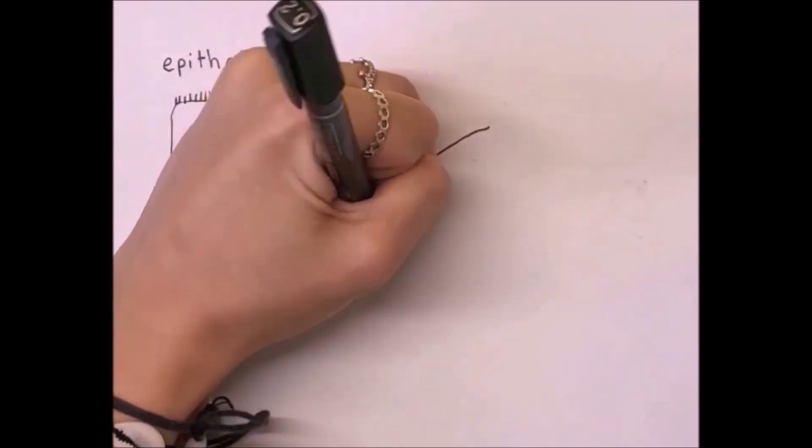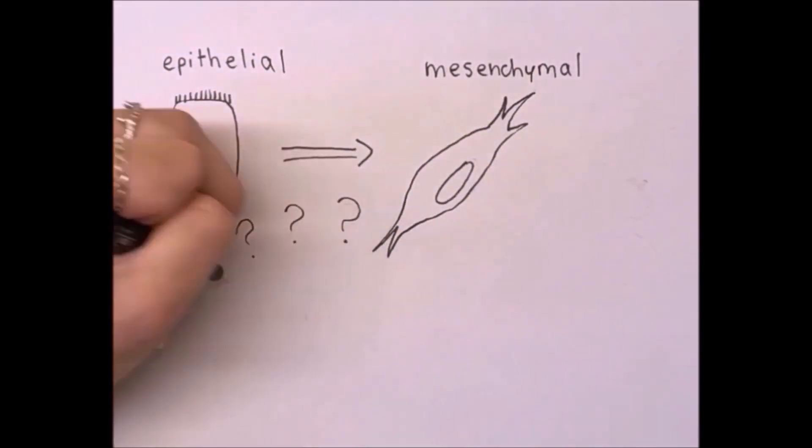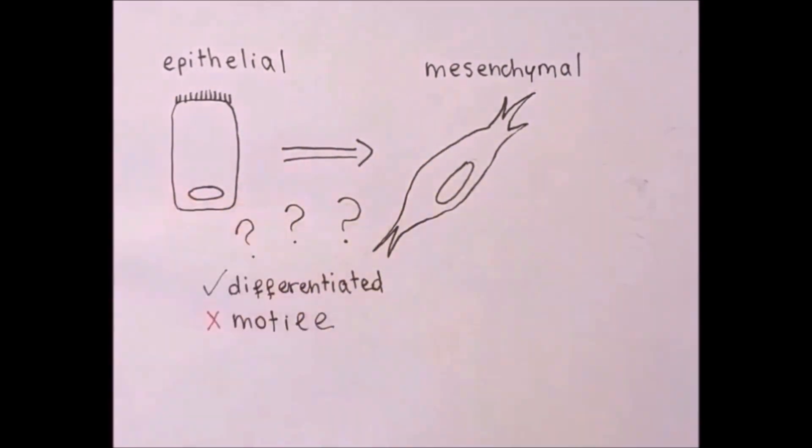But what is EMT needed for? Epithelial cells are said to be differentiated cells, they already have a peculiar shape and organization, they form a solid tissue and they cannot migrate.